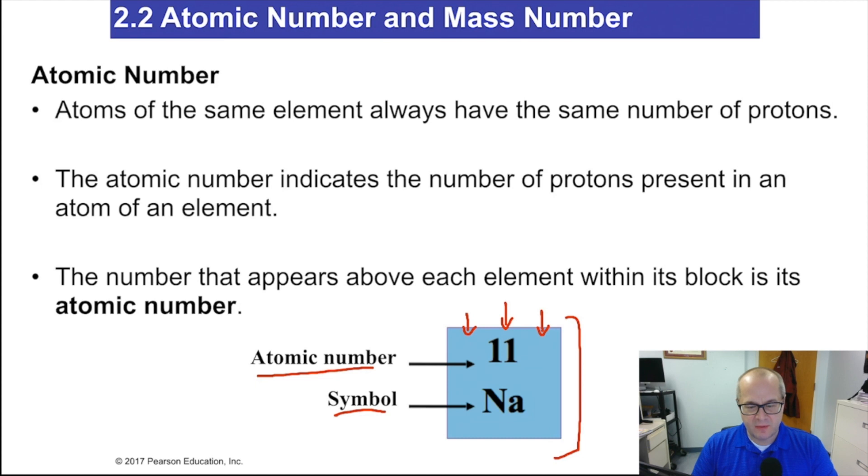Now, the atomic number, which is what it's called, goes in numerical order on the periodic table. It starts at number one in the top left-hand corner, goes to number two in the top right-hand corner, three, four, five, six, and so on. It's sequential. So that's how you identify an atomic number.